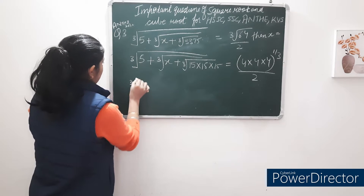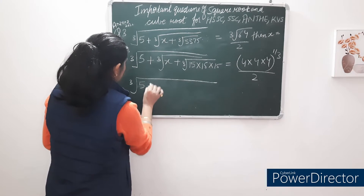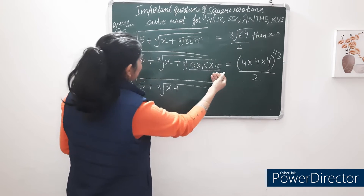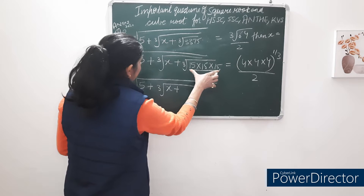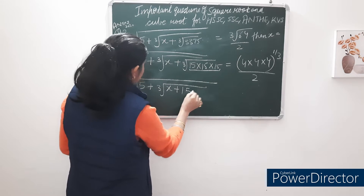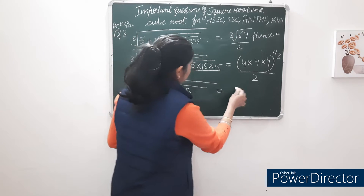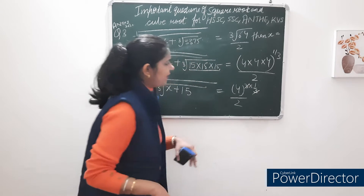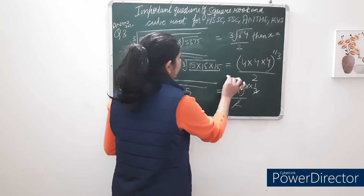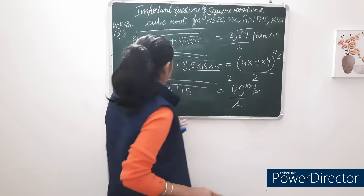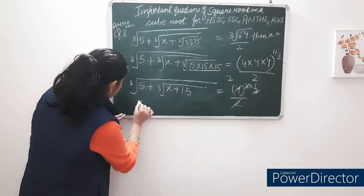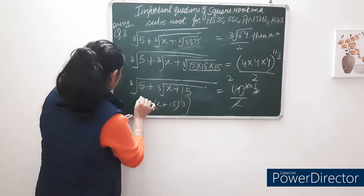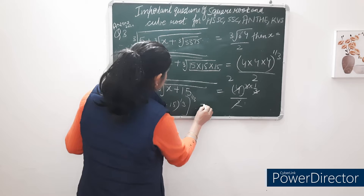So we have: cube root of 5 + cube root of x + 15^(1/3) is equal to 2. Since 3375 = 15³, its cube root is 15, which comes outside. The equation simplifies to (5 + x + 15)^(1/3), whole power 1/3, is equal to 2.